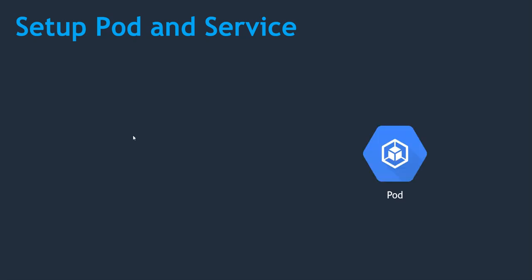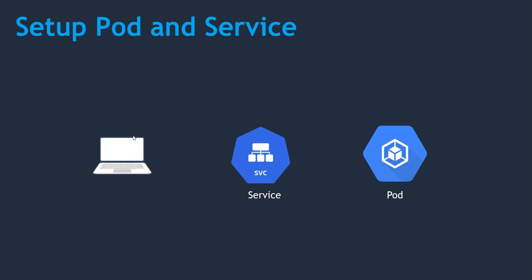Hello folks, welcome back. In the previous lecture we saw how to write our first manifest file, and with that we created a pod. This pod is running on some port number internally. If you wish to access it at the network level — either within the cluster or from outside — that is where we need to create a service. Once we have created a service, we can access it from the external network or within the cluster itself.